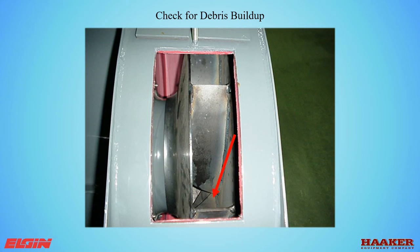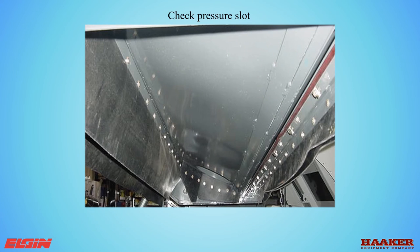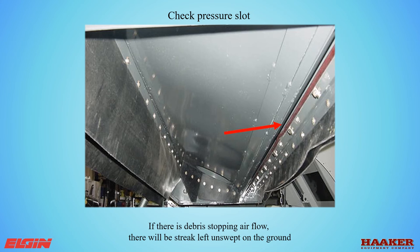Check and clean debris buildup on the blades of the fan down by the shaft. You can turn the fan by hand to reach the next blade — nine blades total. If not clean, a buildup of debris will cause a vibration. Raise the pickup head and look under to check the pressure slot. If debris carried over, it could stop at the pressure slot and plug it up — when sweeping, this will create a streak of unswept area on the ground.